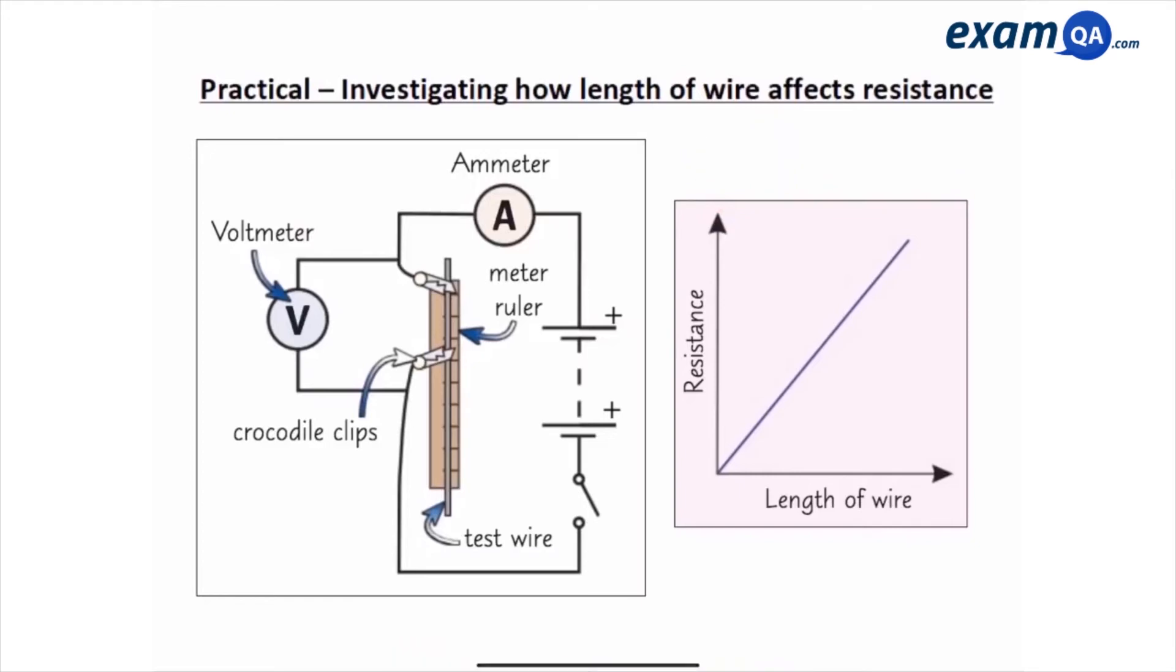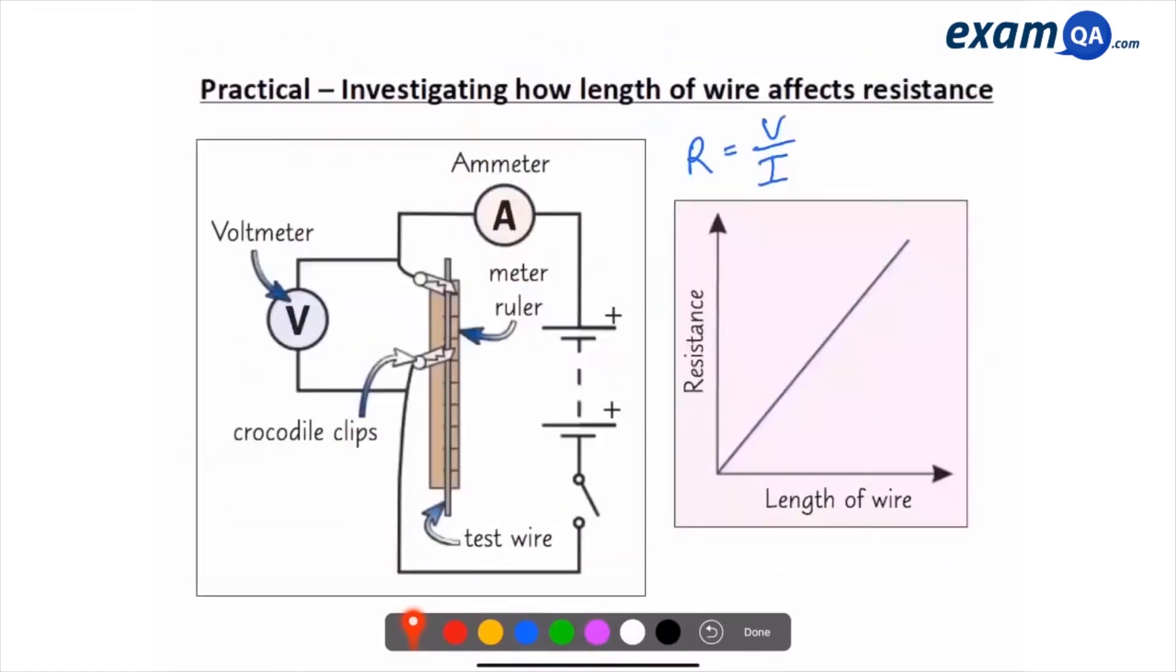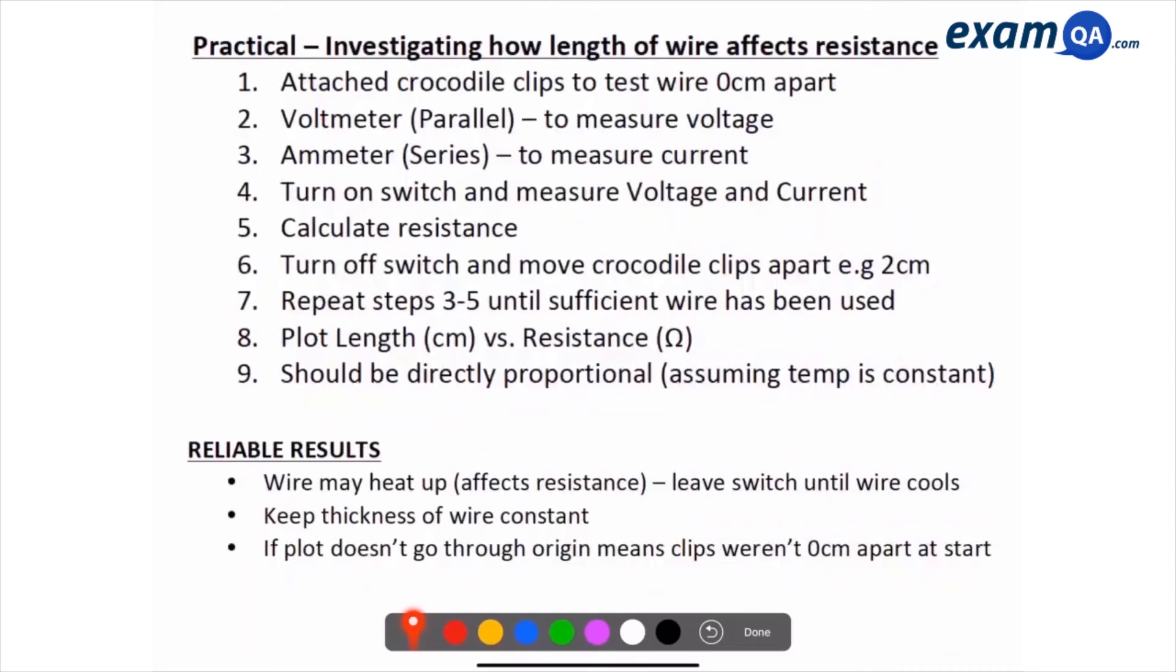Now, how would you explain this in your exam? So let's say you have a six marker. How would you explain it? So here are the points you should mention. Number one, you say attach your crocodile clips to the test wire zero centimeters apart. So literally, they're going to be next to each other, these two crocodile clips.